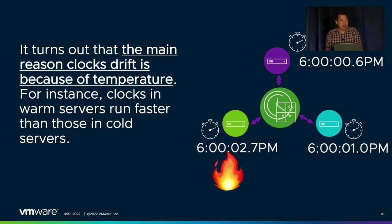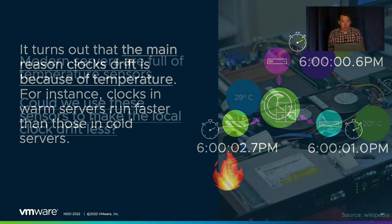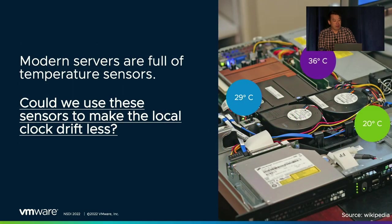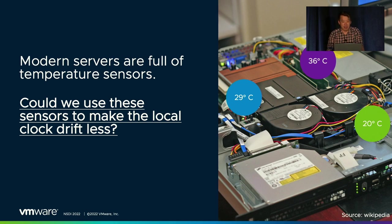It turns out that the main reason clocks drift in the first place is because of temperature. Clocks in warm servers generally run faster than clocks in cold servers, and the loads vary in each server. Modern servers are full of temperature sensors — in the CPU, DRAM, hard disks, and even things like the power supply and the optical drive. So we wanted to ask: could we use these sensors to correct the clock drift of the local clock?